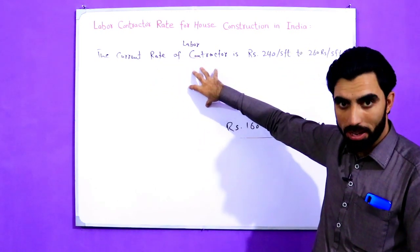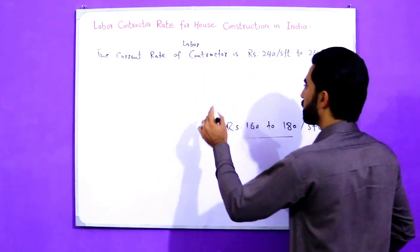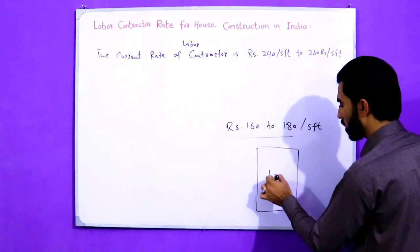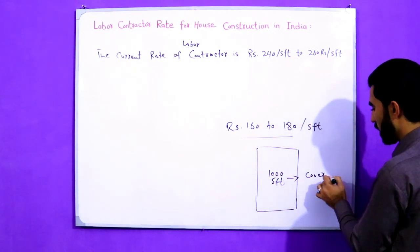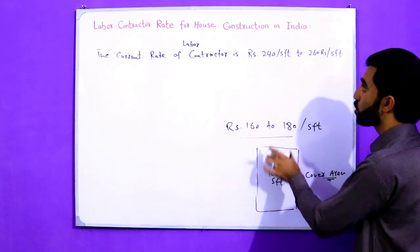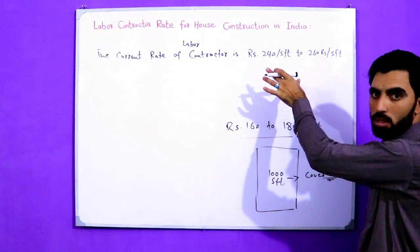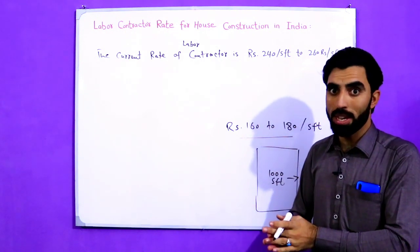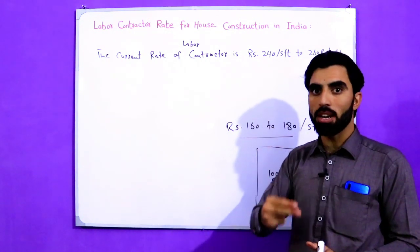To calculate the total labor cost: for example, if your covered area is 1,000 square feet, you multiply 1,000 by 240 rupees. The rate is between 240 to 260 rupees per square feet depending on the contractor. You can also find a good contractor at maybe 230 rupees — it depends on different cities.